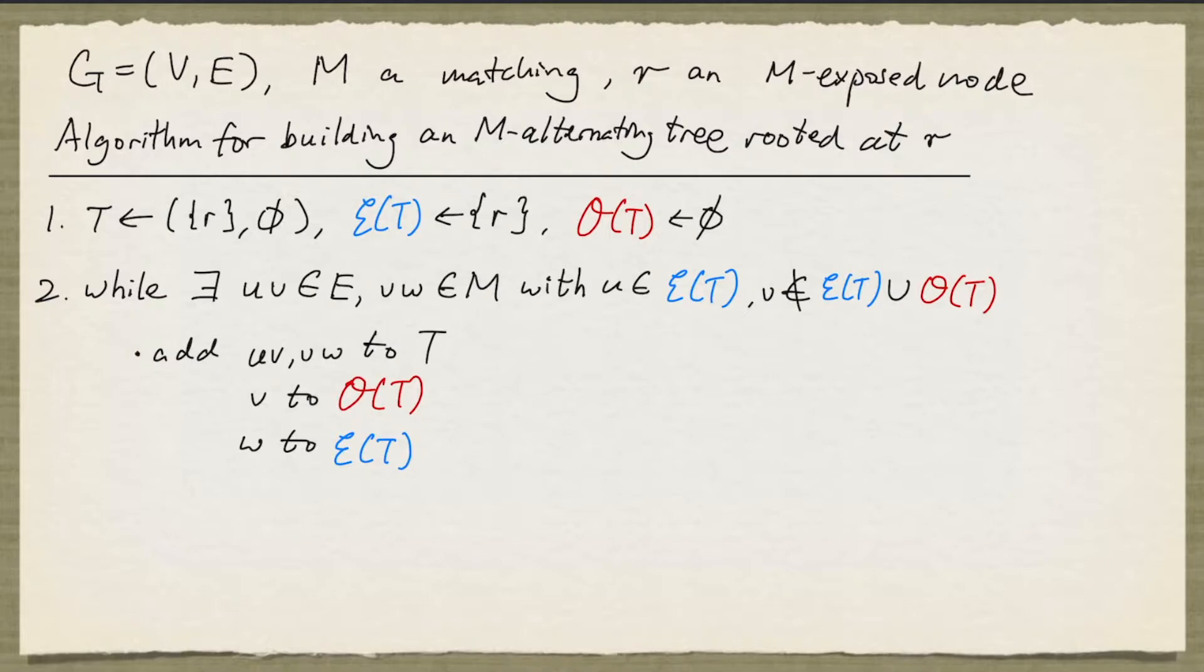And we repeatedly do the following. We find a pair of edges UV and VW such that VW is in M, with U being in the even set and V in neither the even set nor the odd set. And we add these two edges to T, and the node V is added to the odd set, and W to the even set. We keep doing this until no pair of such edges can be found.